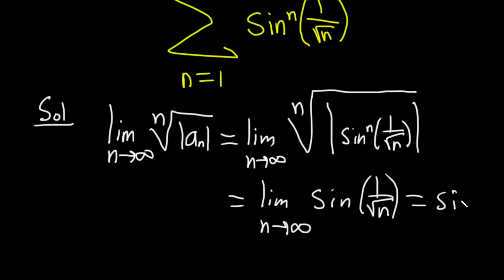And when you take this limit this is the sine of 0 because this piece here approaches 0 because n is growing without bound. It's approaching infinity. And so this is 0 so it's less than 1.